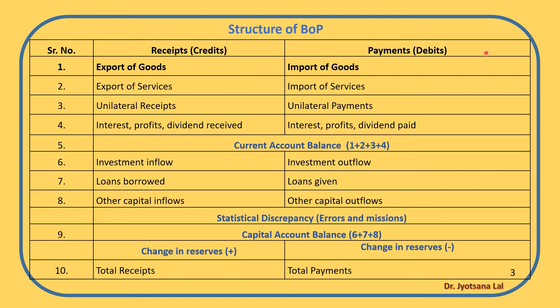Broadly, this BOP account is divided into two types of accounts: one is the current account and another is the capital account.